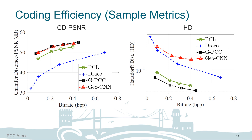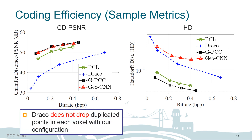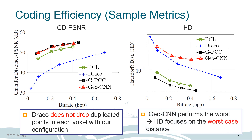First, we look at coding efficiency among PCC algorithms, showing two sample metrics: Chamfer distance PSNR and Hausdorff distance. Draco performs the worst in Chamfer distance PSNR because it does not drop duplicate points in each voxel. On the other hand, GeoCNN performs the worst in Hausdorff distance, which focuses on the worst case. That's because GeoCNN is trained with Chamfer distance as the loss function, which focuses on the average case, so outliers may not be sensitive during training.